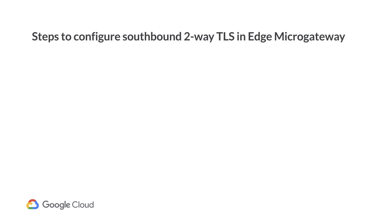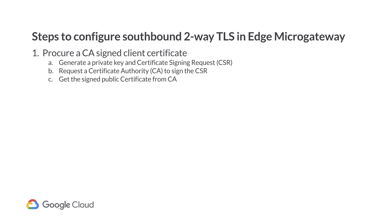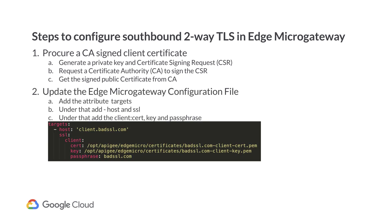Let's look at the steps involved in setting up southbound two-way TLS on the Edge Micro Gateway. As with northbound two-way TLS, we need to obtain a signed client certificate, and this time it's the Micro Gateway acting as the TLS client. Once the client certificate and private key are prepared, the second step is to update the Edge Micro Gateway YAML configuration file for the desired organization and environment. The client certificate and key must be on the file system in PEM format so that we can reference them from the Micro Gateway config. Finally, we will reload the Edge Micro Gateway to pick up the new configuration changes so that it is able to negotiate two-way TLS connections with the target server.